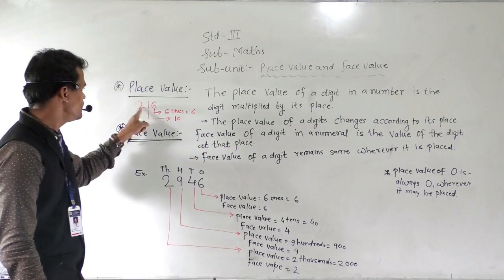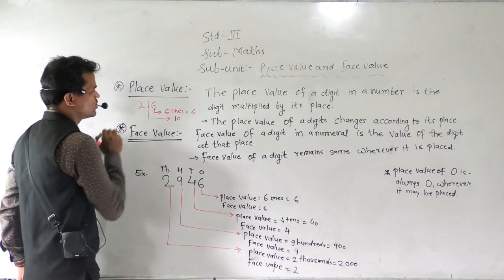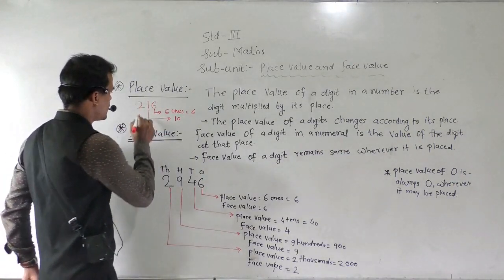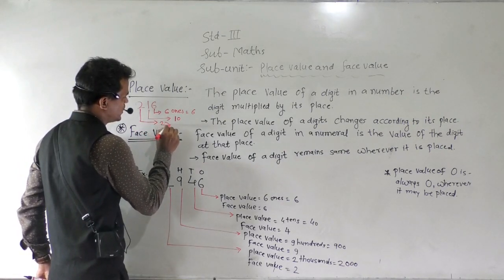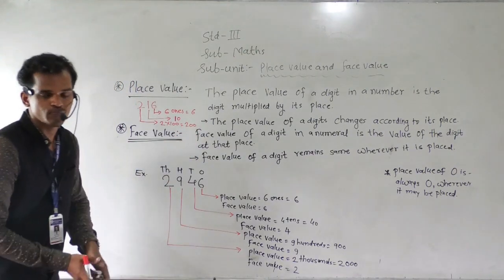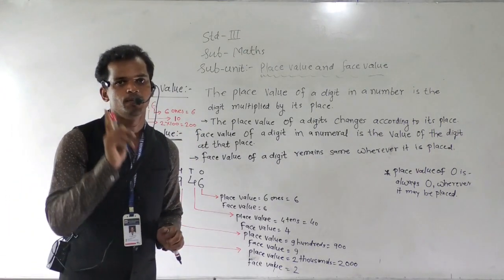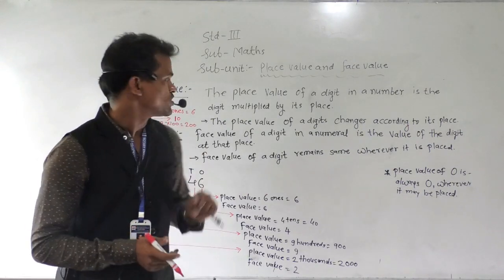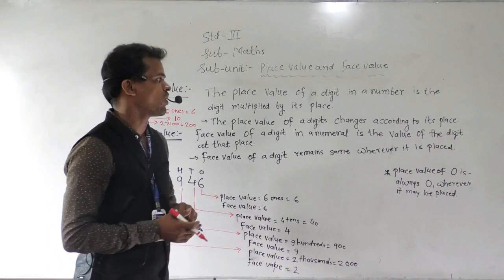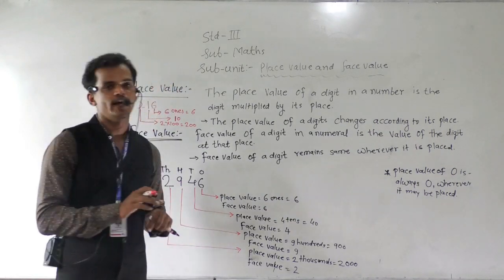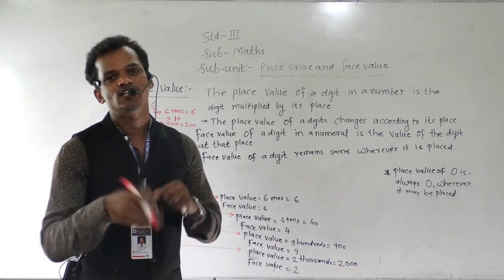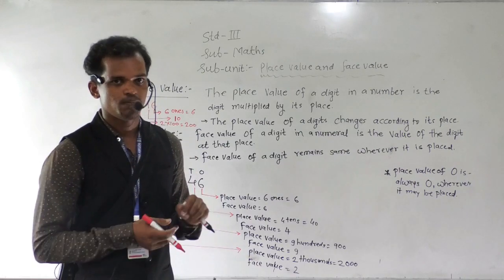So place value of this 1 will be 10. And here this 2 comes at the hundreds place, so 2 multiplied by 100 is equal to 200. So place value depends on the place, and the place value of a digit changes according to its place.